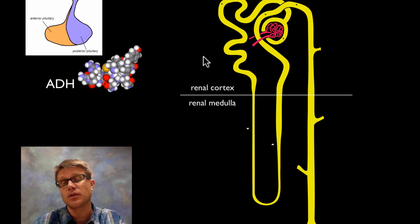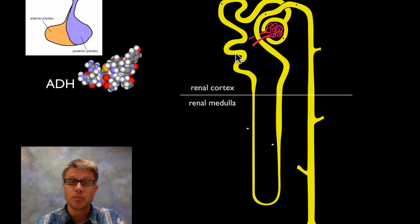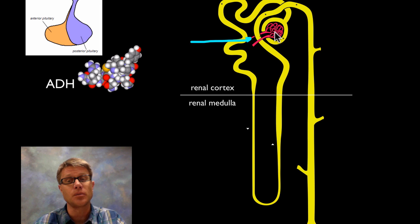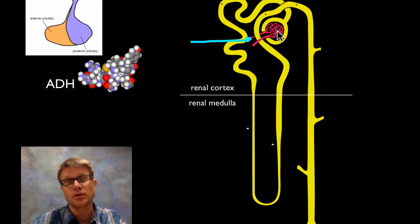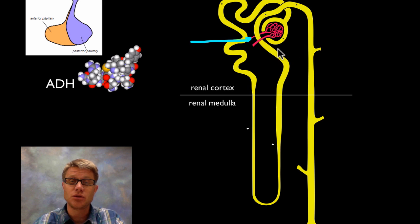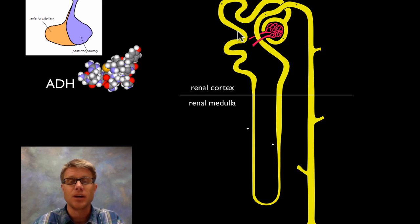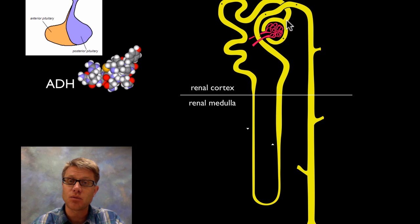Blood flows into something called the glomerulus, then into the Bowman's capsule. The Bowman's capsule does one thing — it filters the blood. We also have the proximal and distal tubule, which are important for secretion and reabsorption, but we're focusing on the water here. The blood flows in and a lot of the water and solutes squirt out, moving into the filtrate. This filtrate is eventually going to become urine and end up in your bladder.